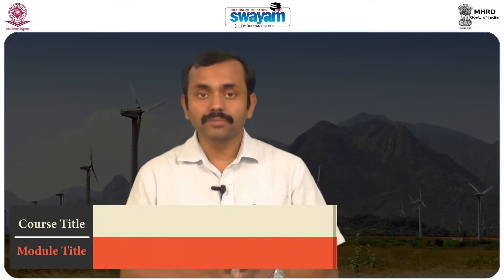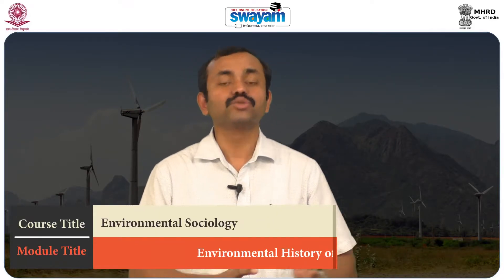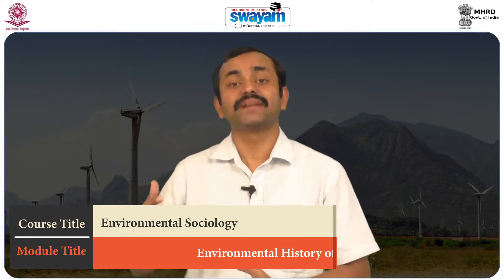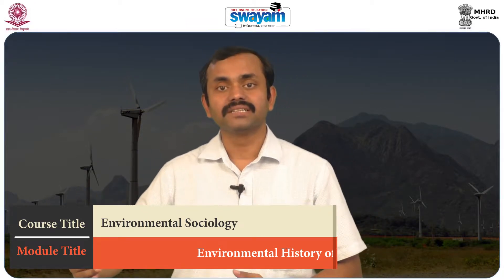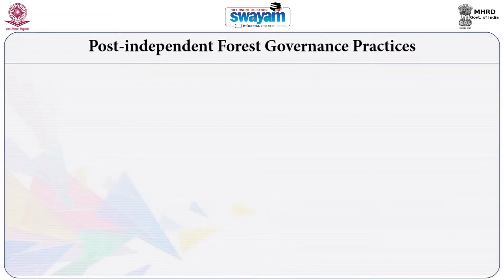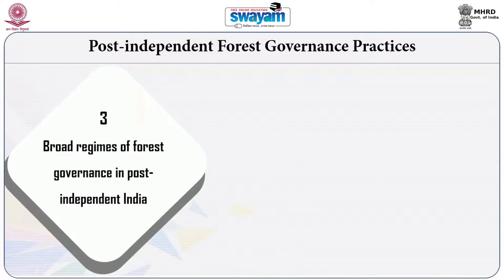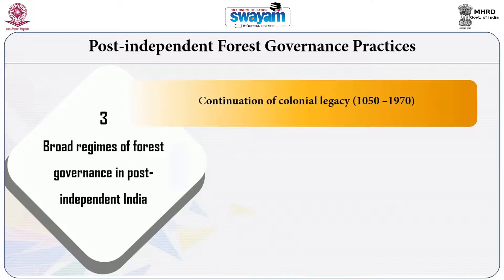In this third part of the class, we will move from history to see the contemporary practices of forest governance in India. We may broadly classify forest governance into three parts. The first is the colonial forest management practice, characterized by state monopoly and state control over forest, using forest for the purpose of industry, commerce, and economic growth.